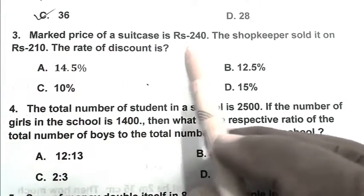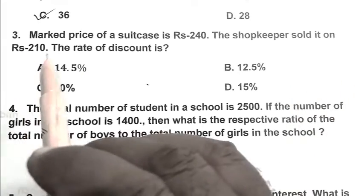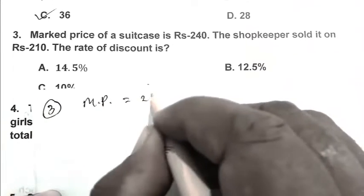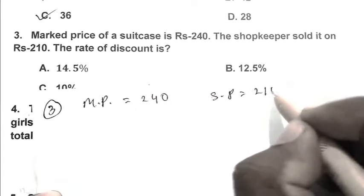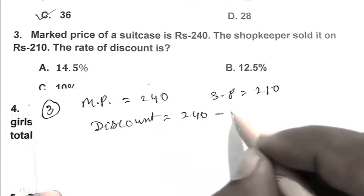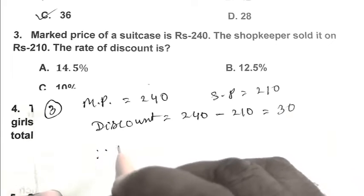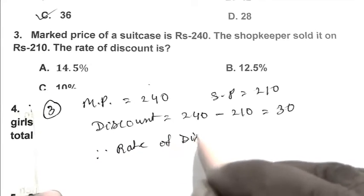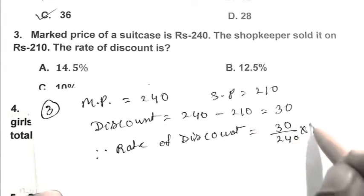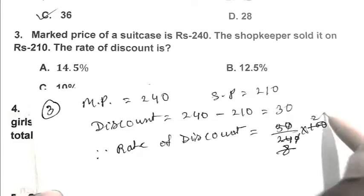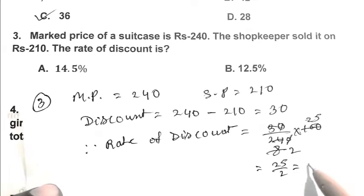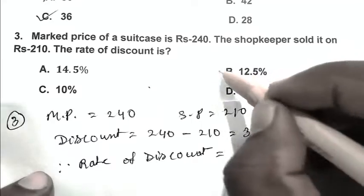Question number 3: Marked price of a suitcase is Rs. 240. The shopkeeper sold it on Rs. 210. The rate of discount is? So friends, marked price 240, selling price 210. So discount: 240 less 210 equals 30. So friends, rate of discount: 30 upon 240 multiplied by 100 equals 25 upon 2, that is 12.5%. So friends, B is the right answer.